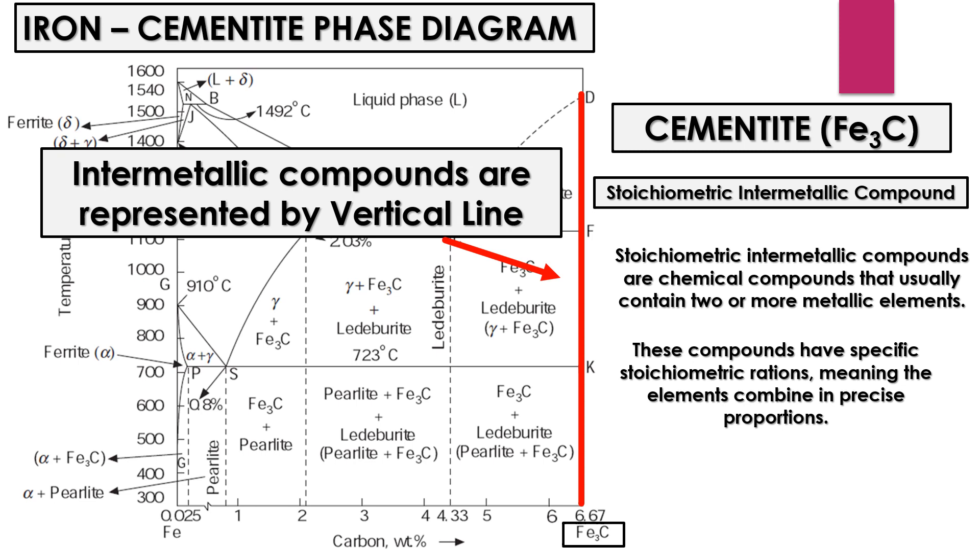This cementite phase consists of iron and carbon atoms in a fixed ratio of 6.67 to 1, which means that cementite is formed at 6.67 weight percent of carbon.